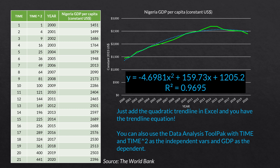Our forecast values Y will equal negative 4.6981X squared, where X squared is our time period squared, plus 159.73X, where X is our original time period, plus 1205.2. If we want to find the forecasted value, we just substitute those values in where the X's are. The R-squared is basically 0.97 — that is insanely high. While it might be good on one level, it should also send up red flags saying maybe we have overfit our data with this model.